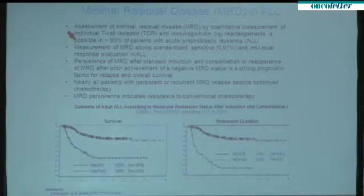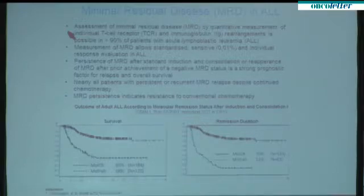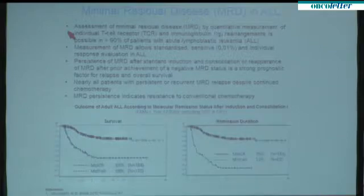And on the left side, you can see that this high relapse rate also translates into poor overall survival. And nowadays, this is the poorest subgroup of adult ALL, which is identified by molecular failure.